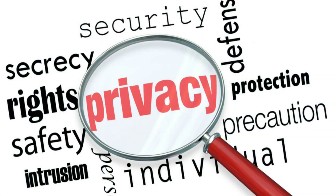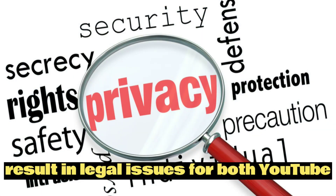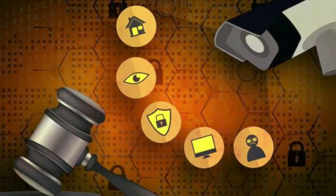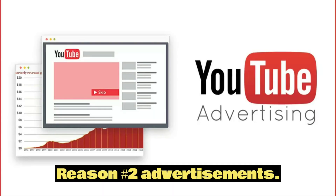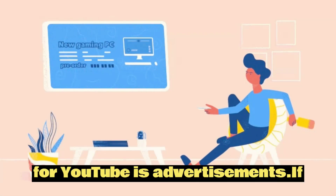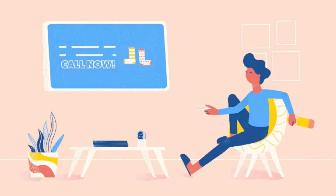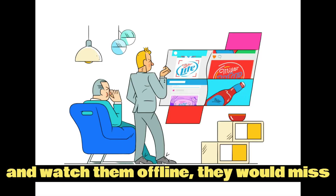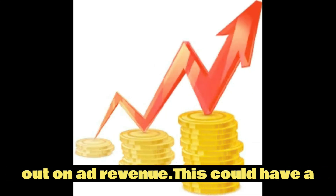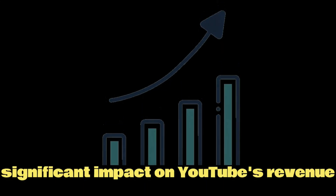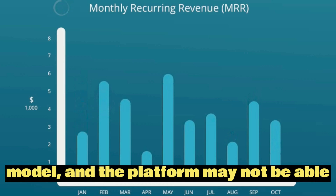This could result in legal issues for both YouTube and its users. Reason number two: advertisements. One of the prime sources of revenue for YouTube is advertisements. If YouTube allowed users to download videos and watch them offline, they would miss out on ad revenue. This could have a significant impact on YouTube's revenue model, and the platform may not be able to sustain itself in the long run.